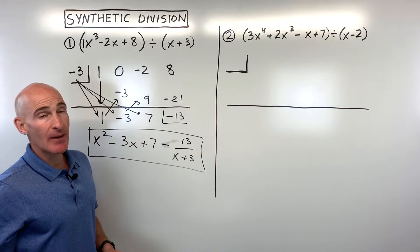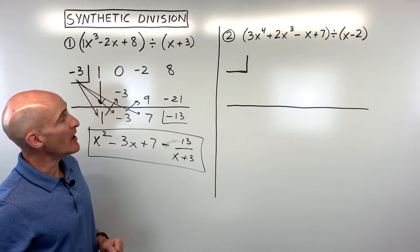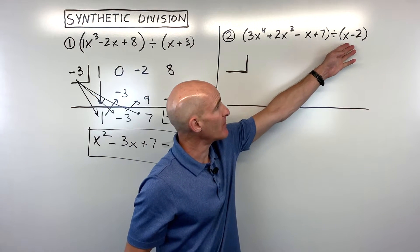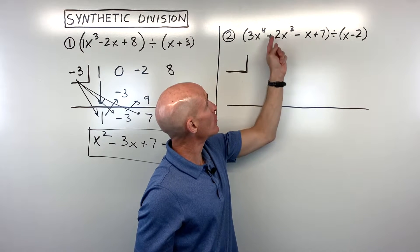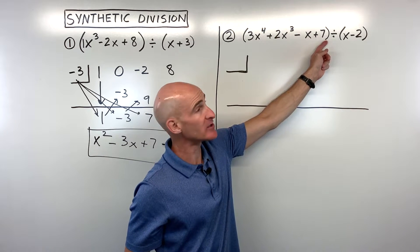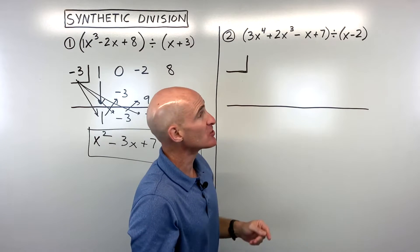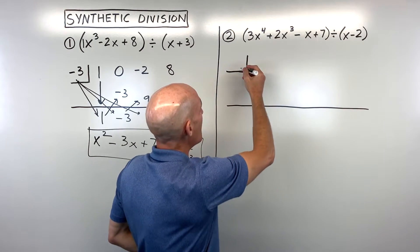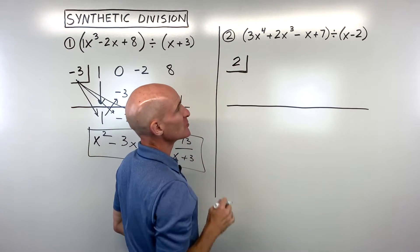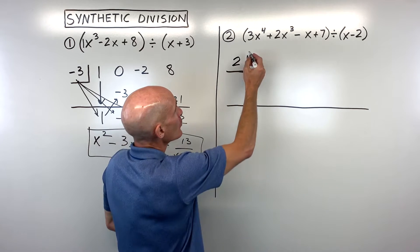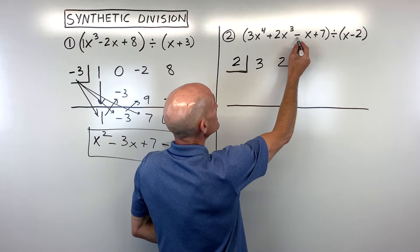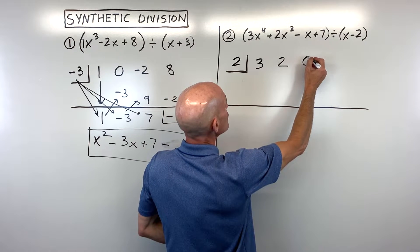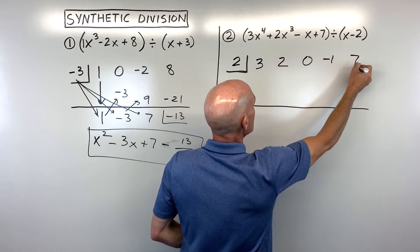Let's take a look at another example. So in example number 2 now, you can see we're dividing by x minus 2. We have our polynomial in descending order from the highest power down to the lowest. And when we divide by x minus 2, remember we want to change this sign to the opposite. So this is going to become a positive 2 that we put right there. We're going to use our coefficients. So 3, 2, 0x squared. So I'll put a 0 there. Negative 1x and positive 7.